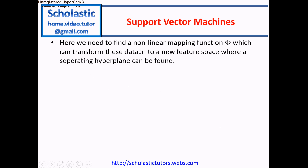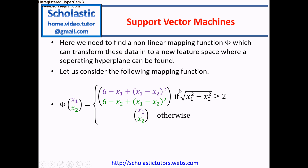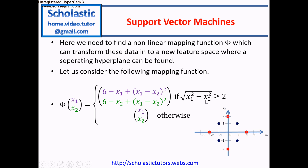We need to find a nonlinear mapping function phi which can transform this data into a new feature space where a separating hyperplane can be found. Consider the following mapping function with original feature vectors x1 and x2: if x1 squared plus x2 squared is greater than or equal to 2, we apply one part of the function; otherwise we use the second part. The blue class values of x1 squared plus x2 squared are always less than 2, so there is no transformation for those four points. The red class points will be transformed into a different place because their values of x1 squared plus x2 squared are greater than or equal to 2.